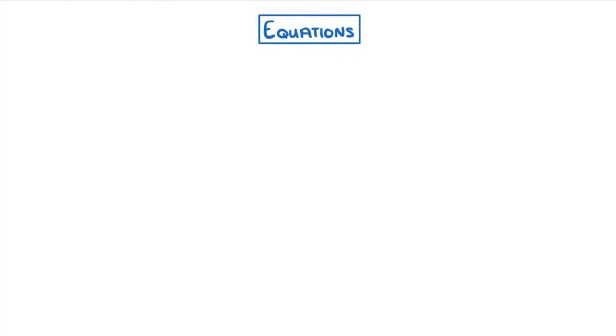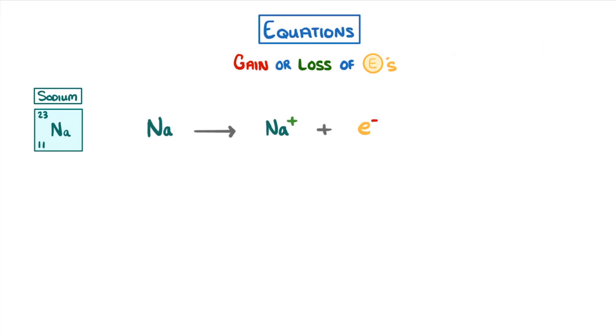Just like we can write chemical equations between different atoms, we can also write equations to show the gain or loss of electrons. For example, in the case of sodium, we could write that a sodium atom goes to form a sodium ion plus an electron. Or, let's say we were looking at chlorine. We could write that chlorine plus an electron forms a 1 minus chloride ion.